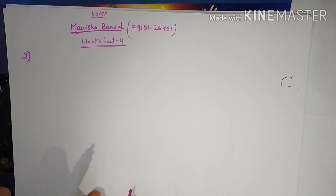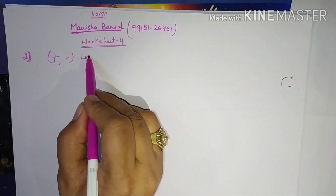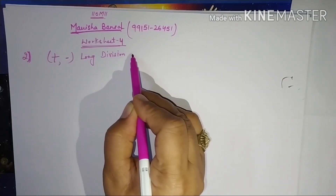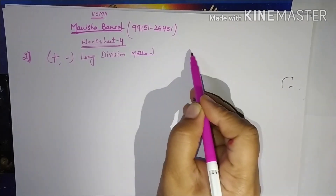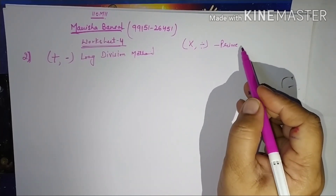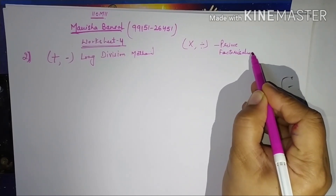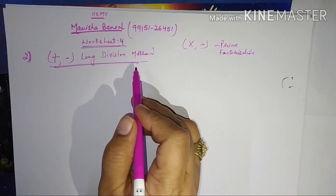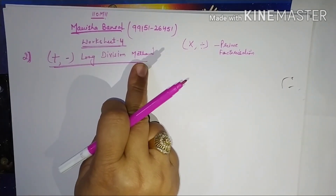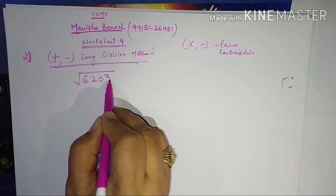To find the square root there are various methods, but the most common ones we use are long division and prime factorization. If we have to find a number which must be subtracted or added, we must use the long division method. If we have to find a number to multiply or divide, we use the prime factorization method. Students are making mistakes here, so please keep this in mind. Since today's question is about subtraction, we follow the long division method. The number given is 6203.